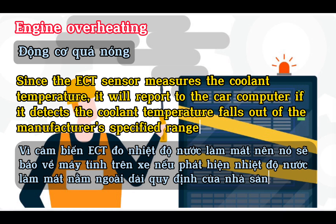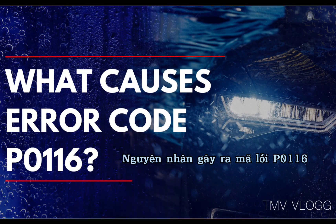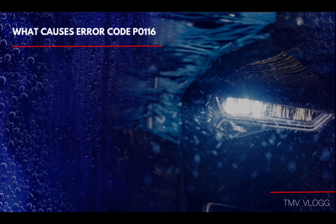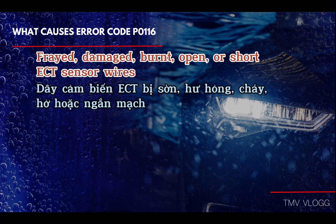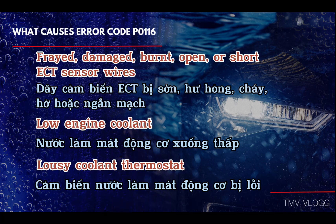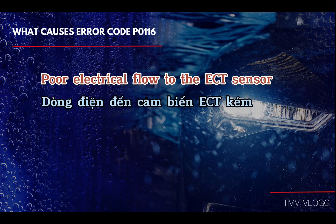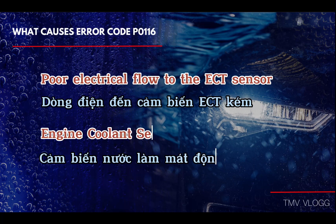Engine overheating: since the ECT sensor measures the coolant temperature, it will report to the car computer if it detects the coolant temperature falls out of the manufacturer's specified range. What causes error code P0116? Causes include frayed, damaged, burnt, open, or shorted ECT sensor wires; low engine coolant; a faulty coolant thermostat; poor electrical flow to the ECT sensor; and a faulty engine coolant sensor.